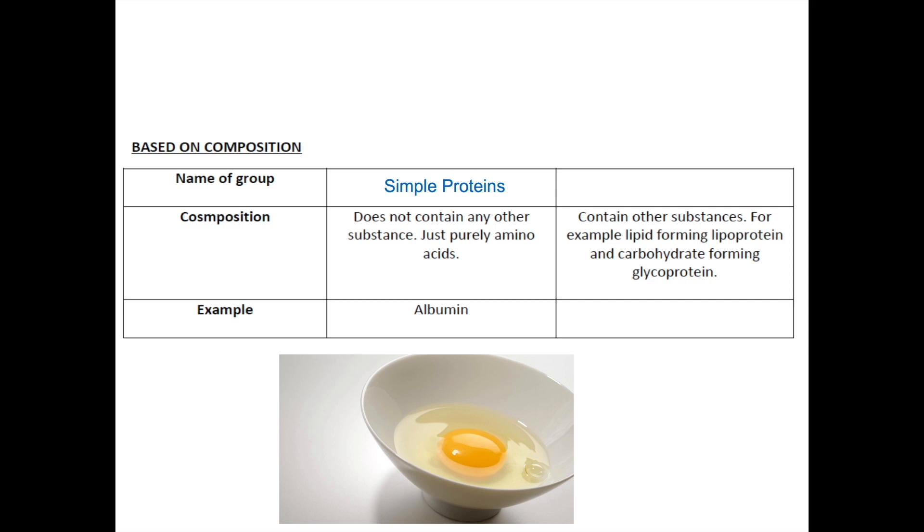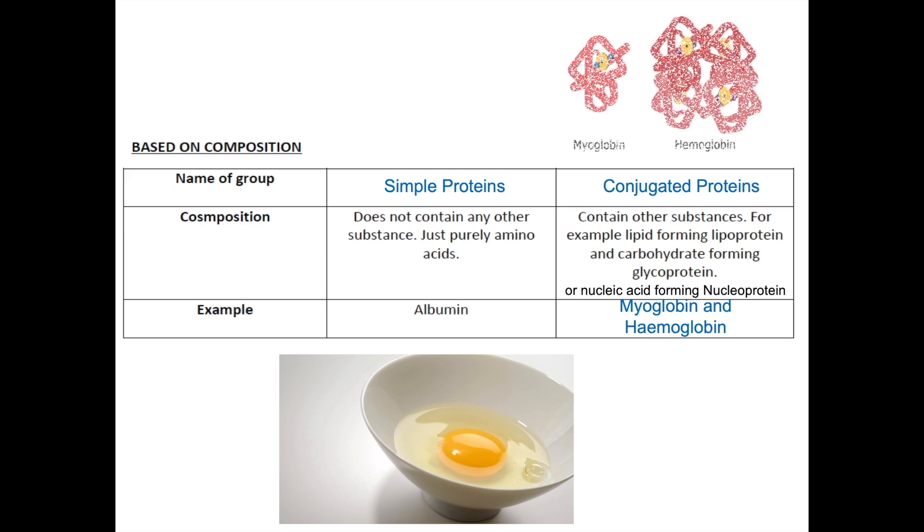The second group of protein is known as conjugated proteins. Conjugated proteins contain other substances which are not protein. For example, if they contain lipid, the protein is now known as lipoprotein. If the protein contains carbohydrates, we call them glycoprotein. And, as extra information, if the protein contains nucleic acid, it will form nucleoprotein. Examples of conjugated proteins include myoglobin and hemoglobin. This is because both have heme group in them.